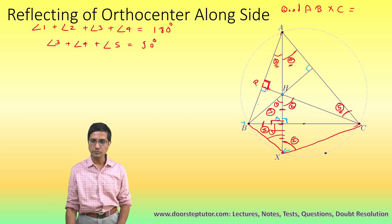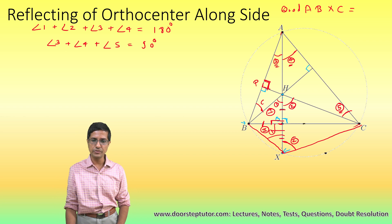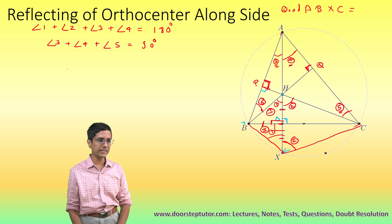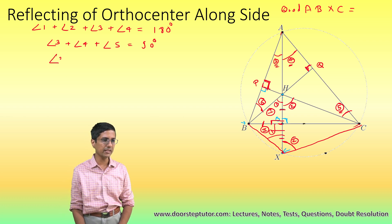Now for triangle ABQ, we name this angle 6. Looking at this triangle, the angle at Q is 90 degrees, so angle 3 plus angle 4 plus angle 6 should also equal 90 degrees.